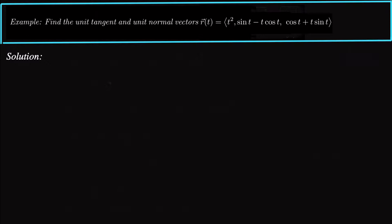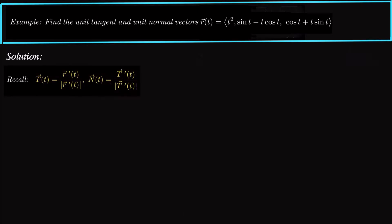This is going to be pretty straightforward once we know what the definitions are. The unit tangent vector is the tangent vector r prime divided by its magnitude. The derivative has always been associated with the tangent vector or the tangent line to a curve. In 3D, the tangent vector takes the place of the derivative. So the unit tangent vector is the derivative, or tangent vector, divided by its magnitude, provided that it's not zero.